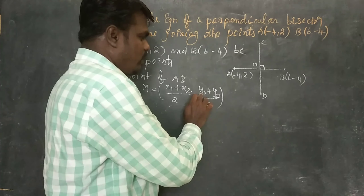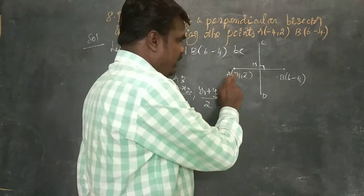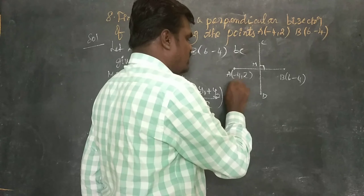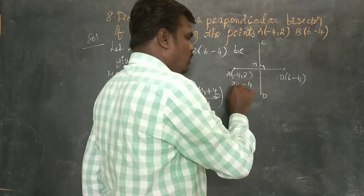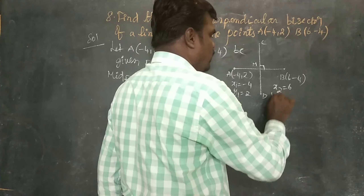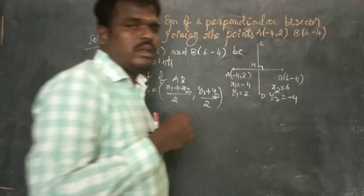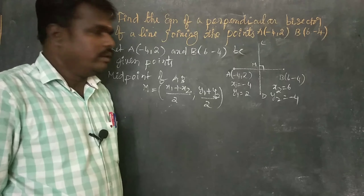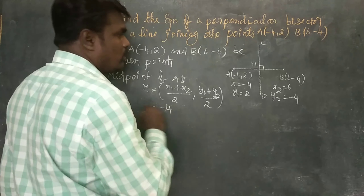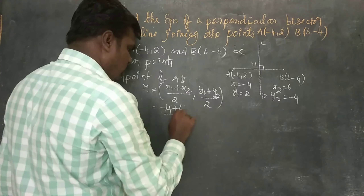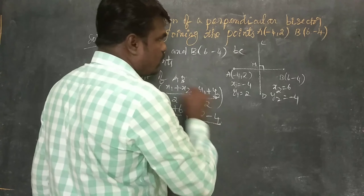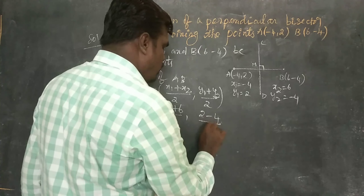Here x1 = -4, y1 = 2, x2 = 6, y2 = -4. So midpoint M = ((-4 + 6)/2, (2 + (-4))/2) = (2/2, -2/2).